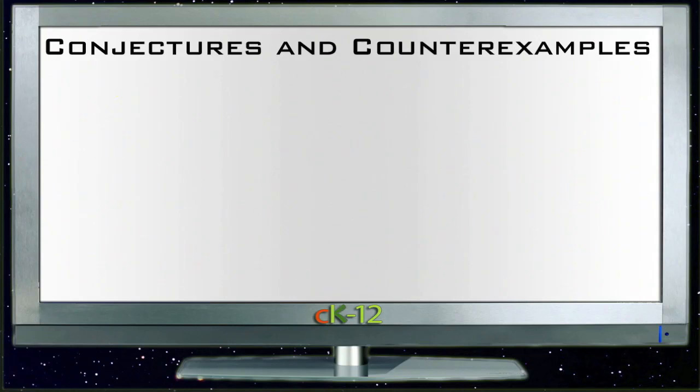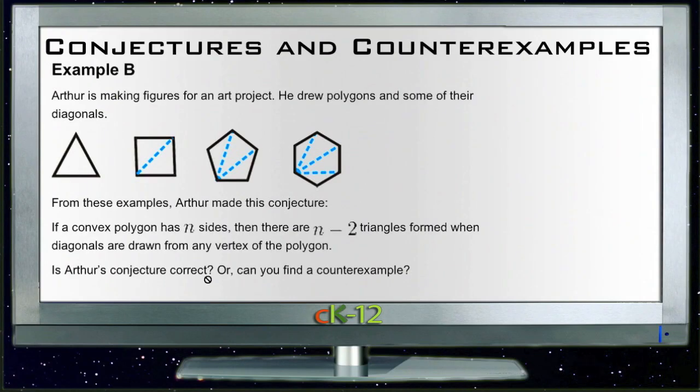Let's take a look at example B. Example B says that Arthur is making figures for an art project, and he's drawn a bunch of polygons and some of the diagonals. So he takes a line from any vertex and draws it to another vertex. Now obviously for a triangle, he'd just be going right along the sides, so there's nothing marked. For a square, he can only go from one corner to one corner without crossing. For a pentagon, he can do two. A five-sided figure has two diagonals. A hexagon, a six-sided figure, has three diagonals.